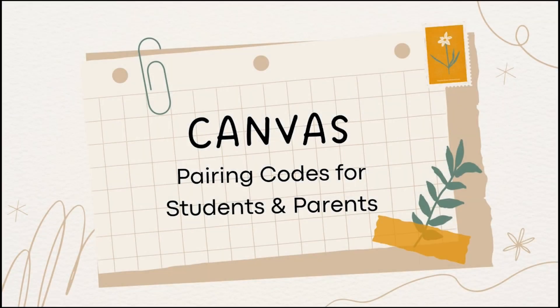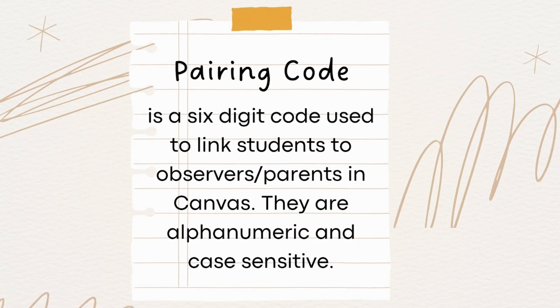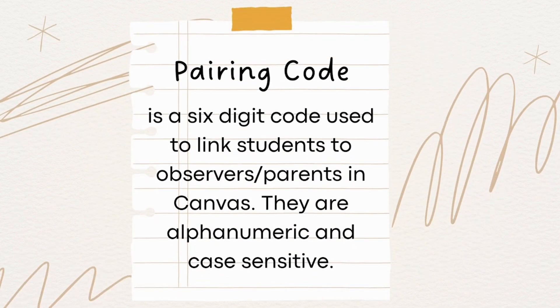Hi everyone! Welcome to today's tutorial on Canvas Pairing Codes for Students and Parents. A pairing code is a six-digit code used to link students to observers, or the student's parents and guardians. These codes are alphanumeric and case-sensitive.